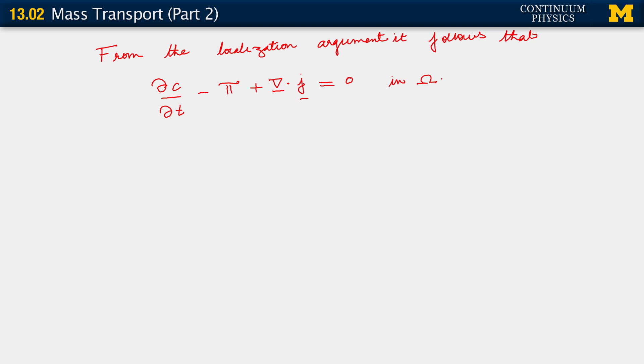Because on the left hand side, we do indeed have a time derivative. So this is a time dependent problem. So it's omega cross 0 comma t, where as always, 0 comma t is our interval, our time interval of interest. Now, so this is our PDE. This is our equation for the balance of mass.